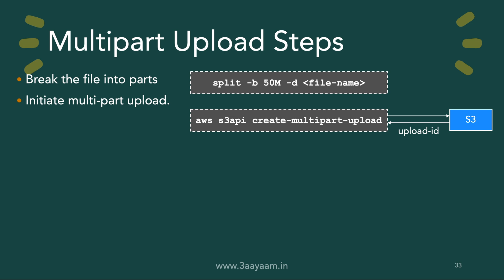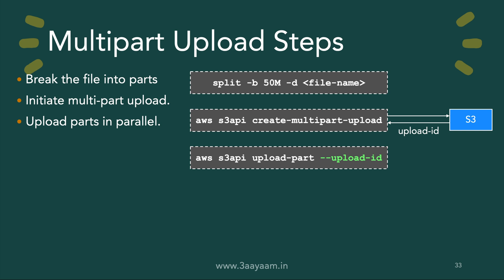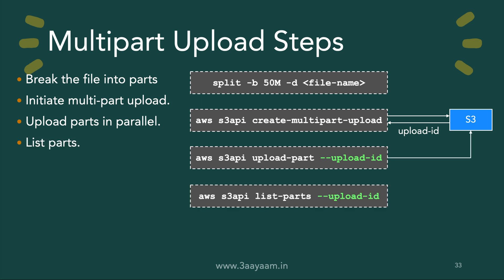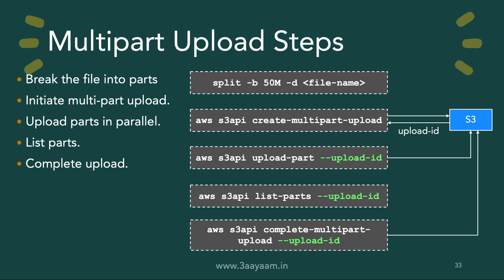The upload ID is very important because S3's assembling will be based on it. Once we have the upload ID, we upload the parts in parallel using the `upload-part` command followed by the upload ID. All subsequent commands must include the upload ID, otherwise S3 won't know which upload you're referring to. Then we list the parts, and finally we complete the multi-part upload. Only then does S3 assemble all the parts automatically.